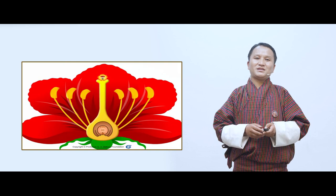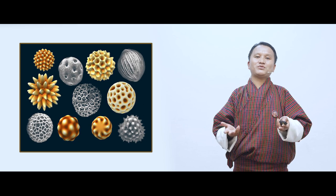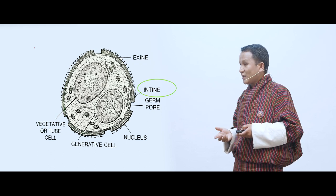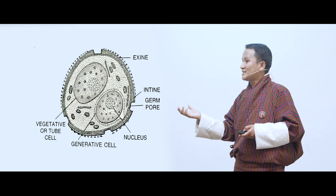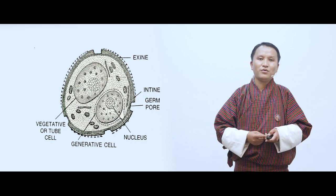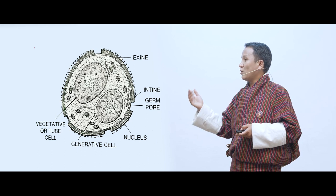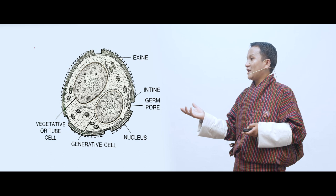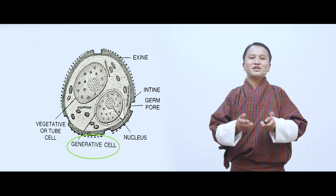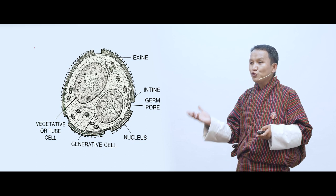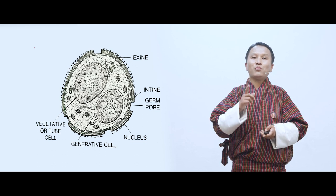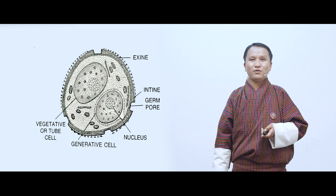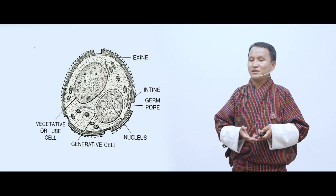Let us look at the structure of a pollen grain. The outermost part is the exine, and inside that is the intine. There is a portion of the pollen grain devoid of exine and intine called the germ pore — it is through the germ pore that the pollen tube grows. Inside the pollen grain there are two nuclei: the larger one is the vegetative nucleus (also called tube nucleus) and the smaller one is the generative nucleus. The pollen tube is essentially an extension of the germ pore.